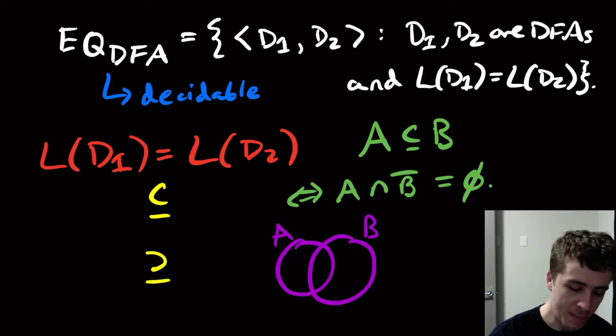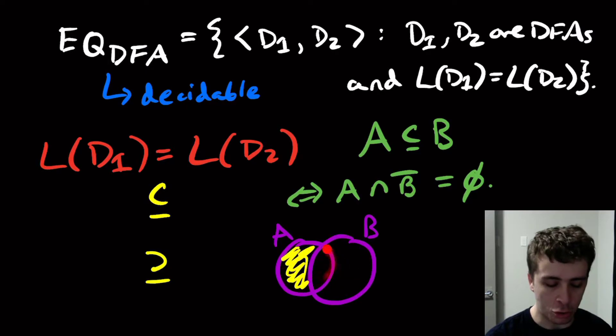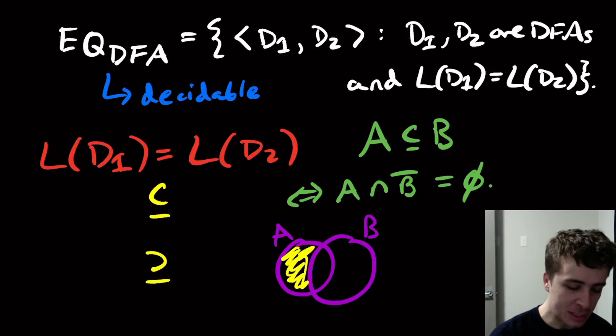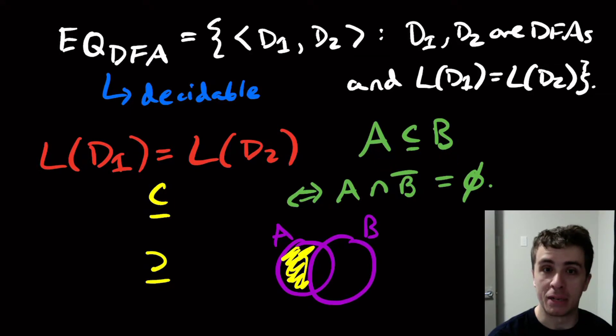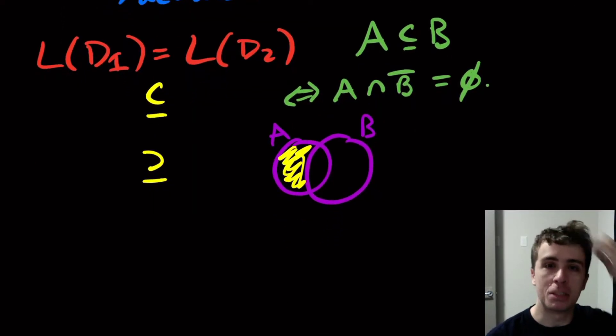If you look at a Venn diagram of what this looks like, let's say this is A and this is B. This set right here is saying all the strings that are in A and not in B at the same time, and so that's all of this stuff right here. If we want these two circles to be the same thing, there should be nothing right here. It actually kind of makes sense if we apply this in the other direction of whether B is a subset of A.